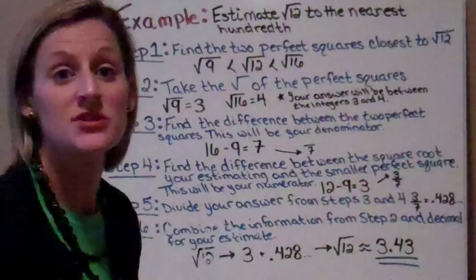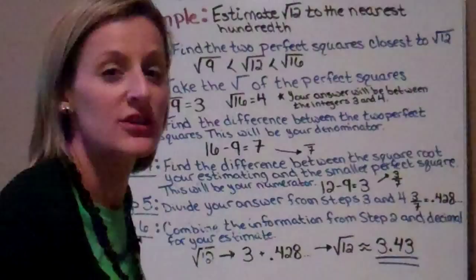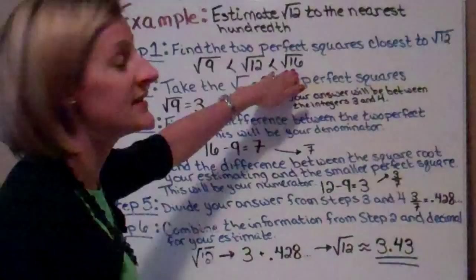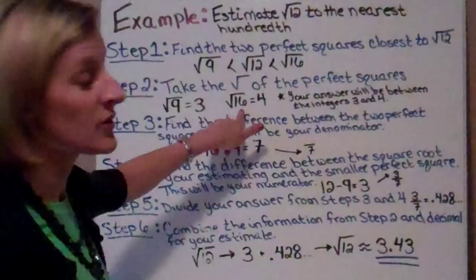There are about six steps that we need to do. The first step is to use those perfect squares to figure out which two integers it's going to fall between. So you're going to find the perfect squares closest to the square root of 12. Well, 9 is a perfect square, and on the other side, 16 is the next perfect square. Step 2 says to take the square root of the perfect squares.